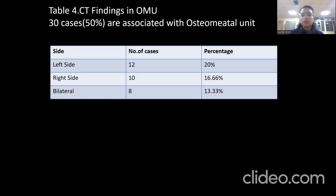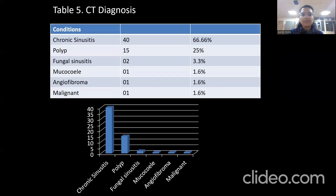These are the CT findings in ostiomeatal unit association. Out of 60 cases, 30 cases — that is 50% — are associated with ostiomeatal unit involvement. Most commonly involved is the left side with 12 cases, and 8 cases show bilateral ostiomeatal unit involvement.